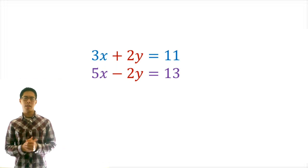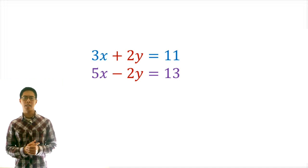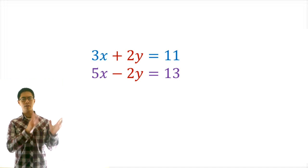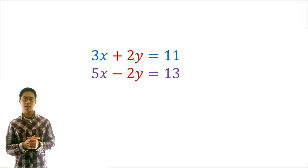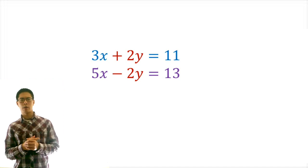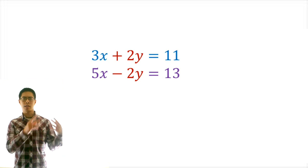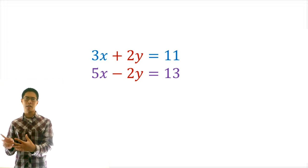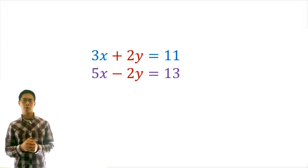Step 1, we decide which variable will be easier to eliminate. Here, it's pretty easy to see that y will be easier to eliminate because the constants for y in these two equations are already the same number as well as opposite signs. Step 2, we multiply one or both equations by a constant — but this is already true for the two equations, so we don't need to do anything extra. That's convenient.